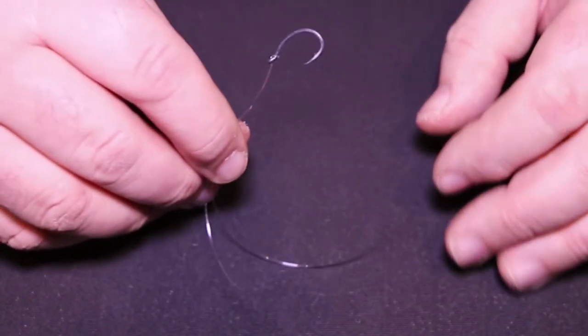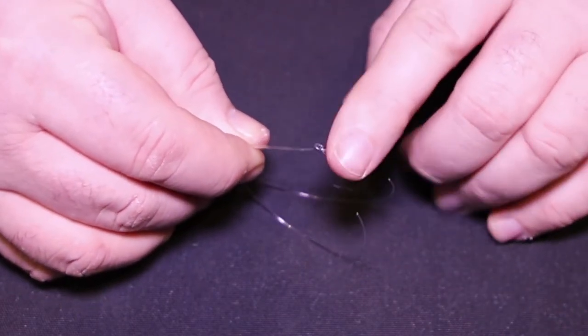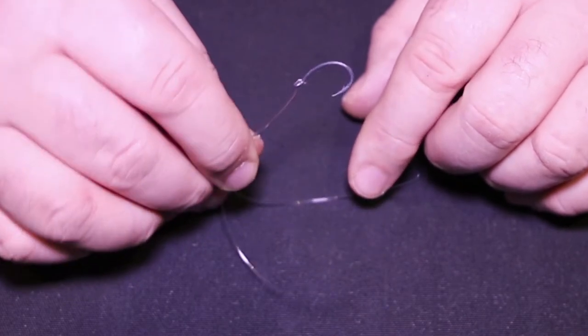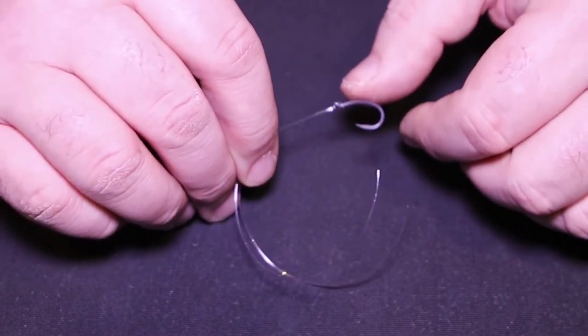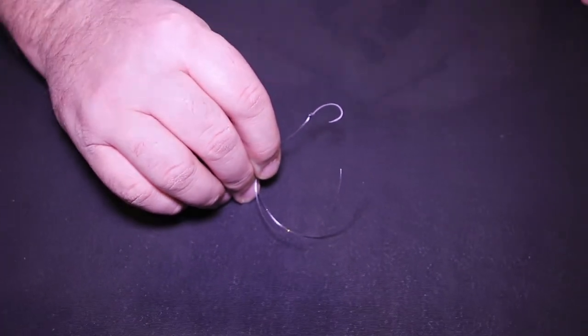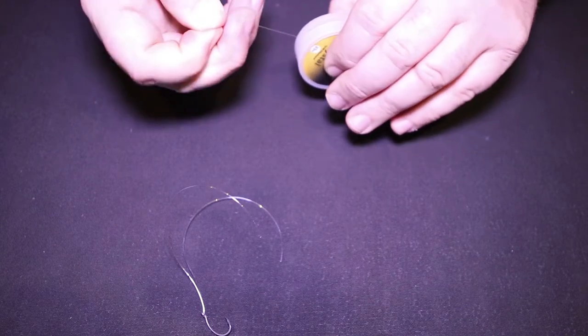You've now got the starting of a super stiff chod rig. You can see it springing away there—twice the strength, twice the spring, and that's due to the double strand. Grab yourself another ten inches.